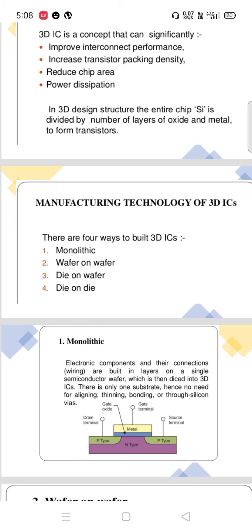Manufacturing technologies of 3D ICs. There are four ways to build 3D ICs. First is monolithic, wafer on wafer, die on wafer, and die on die.